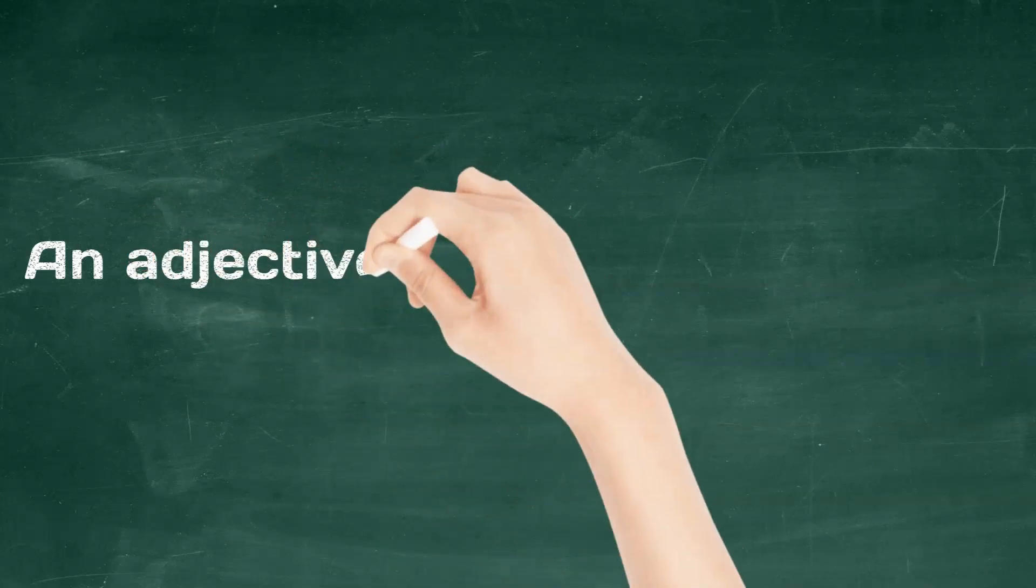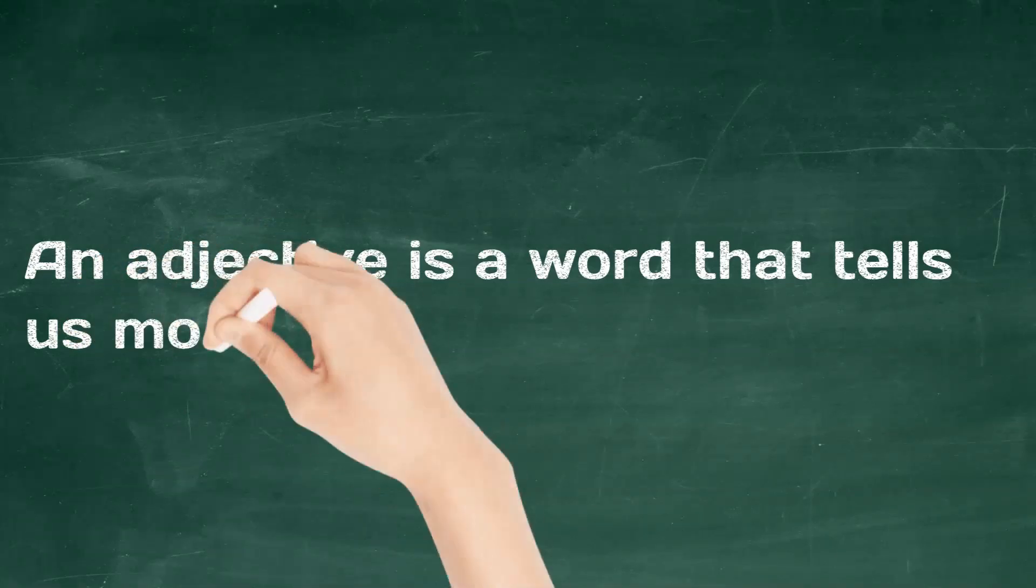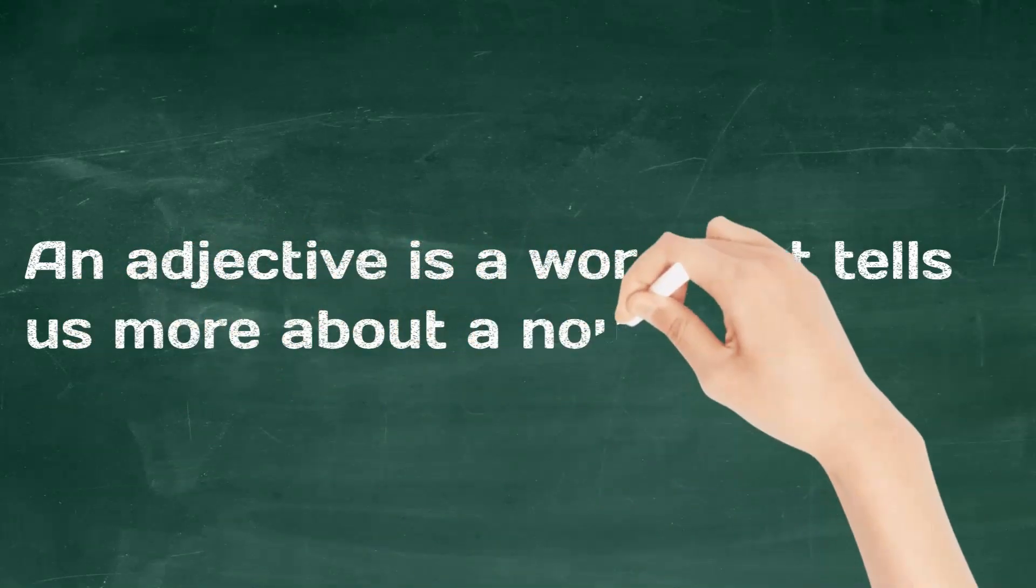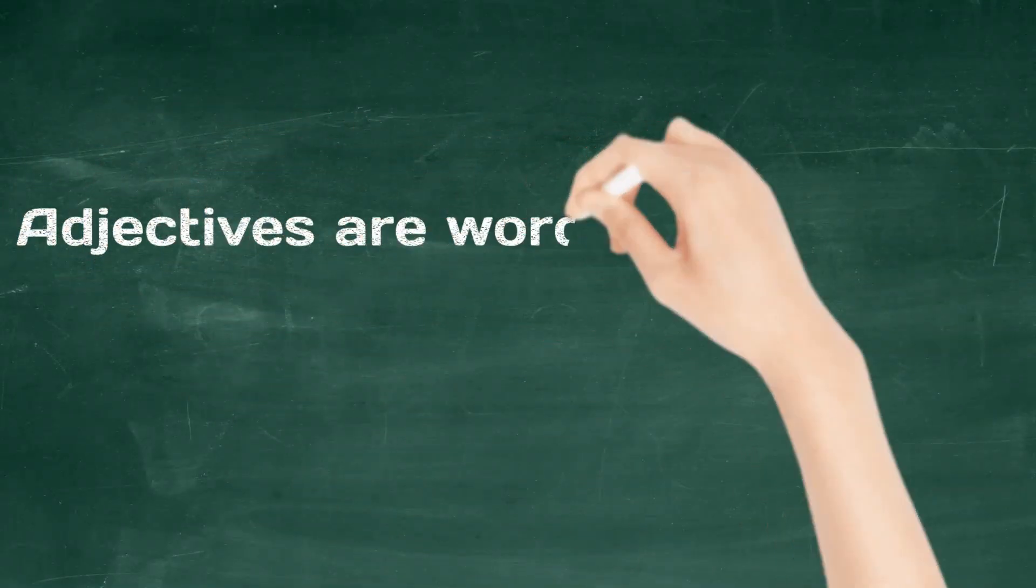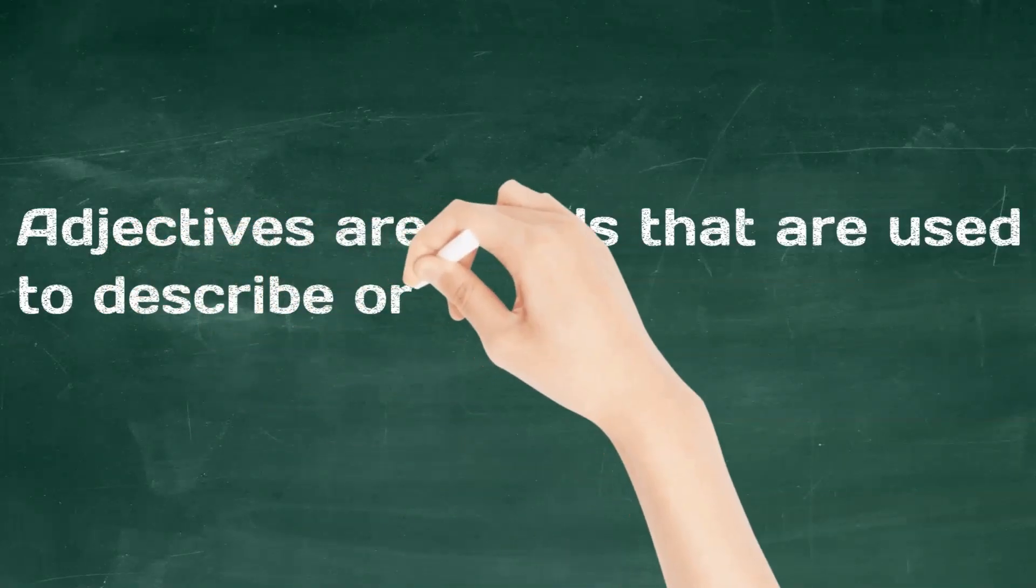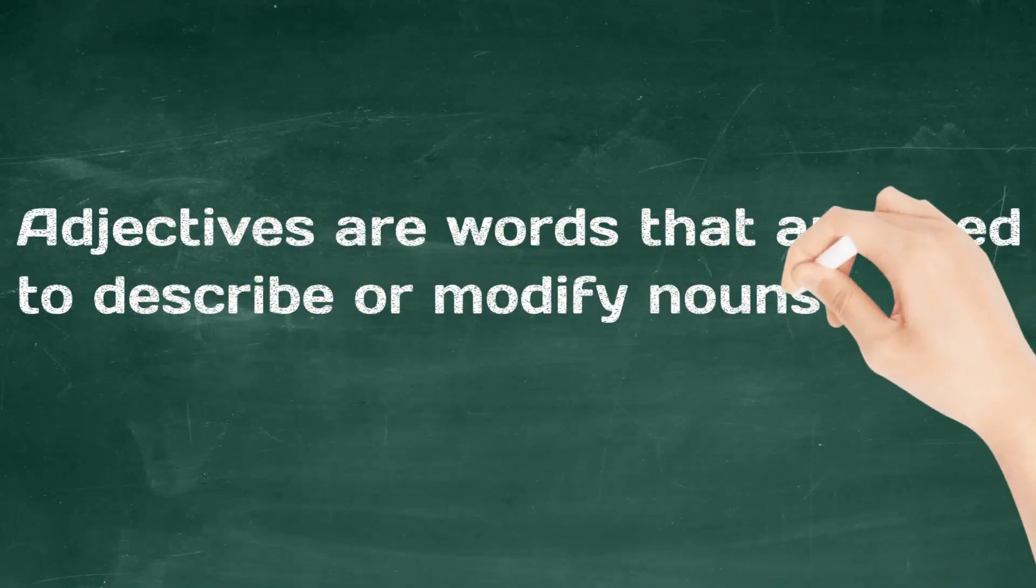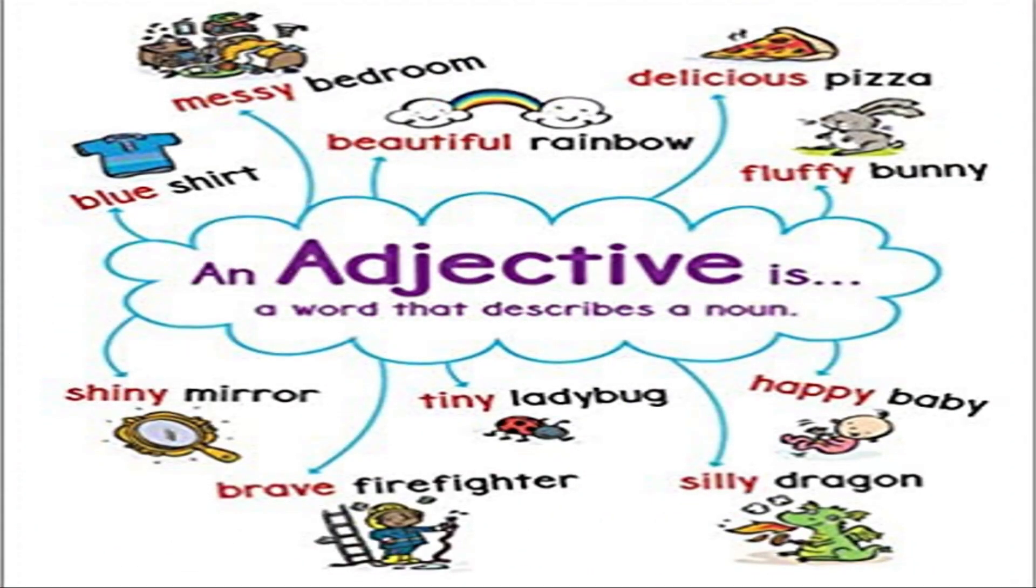So, an adjective is a word that tells us more about a noun or pronoun. Adjectives are words that are used to describe or modify nouns or pronouns. Adjectives are describing words.